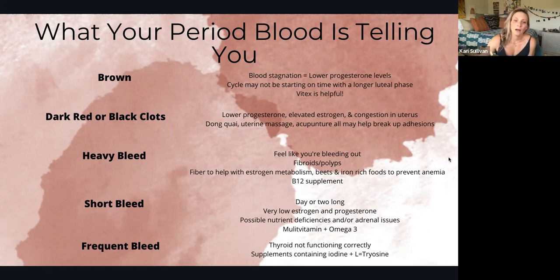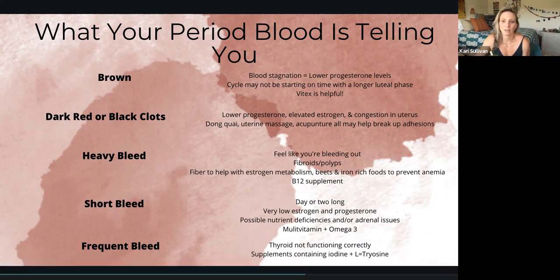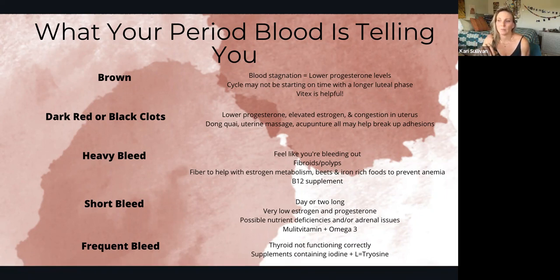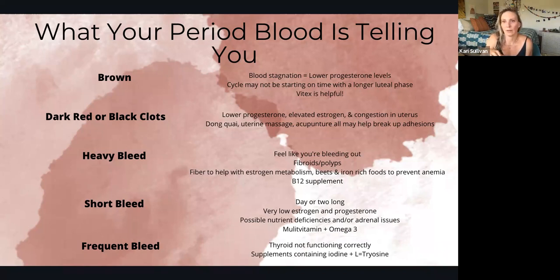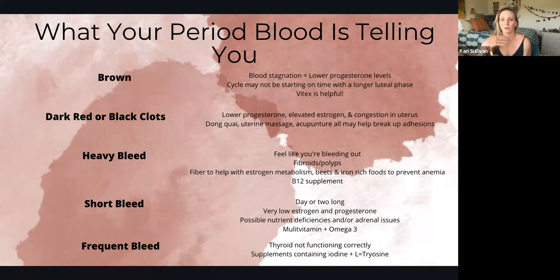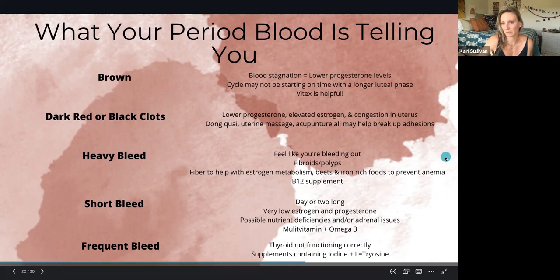Frequent periods — multiple bleeds throughout the month — could be a sign that your thyroid is not functioning correctly. Incorporating an iodine supplement can help, but be careful not to overdo it or you'll also negatively impact your thyroid. Plus L-tyrosine. Frequent bleeds can also happen around perimenopause — everyone experiences it differently. Some go stretches without a period, then get irregular bleeds. Hopefully through taking action now, you'll have a more consistent path by the time you get there.